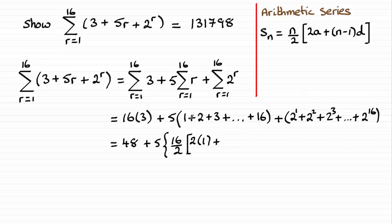Plus n minus 1 times the common difference. n is 16, take away 1, that's going to be 15. The common difference is 1. We're adding 1 to each term. So there's our summation for the arithmetic series there in the bracket.